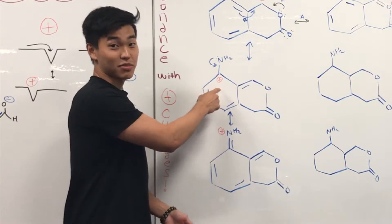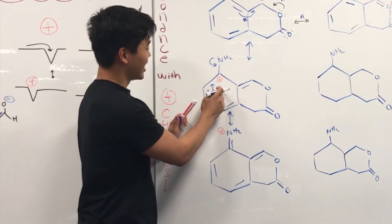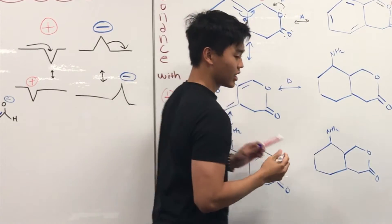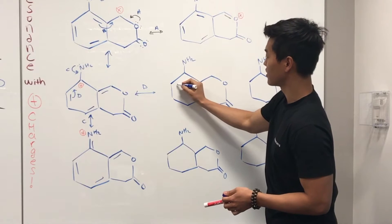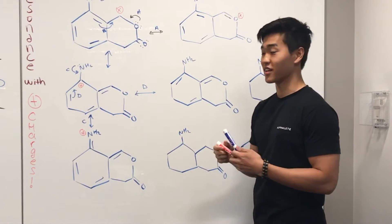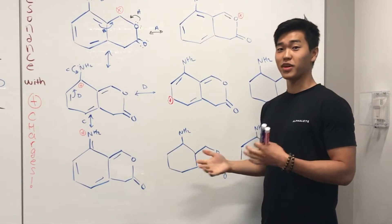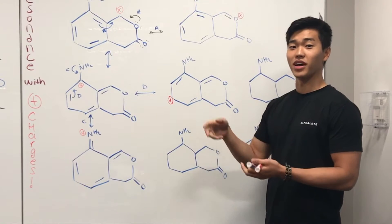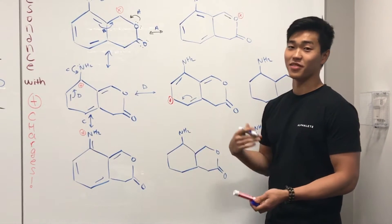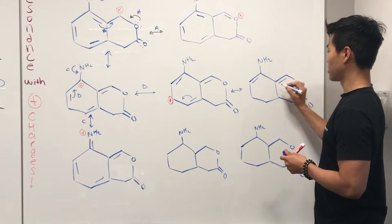Going back to the previous structure, the bond can also attack the positive charge — that's another path. We label the nitrogen path C and this new bond path D. This bond attacks adjacent to the charge, giving us a double bond here, with everything else unchanged. We get a new positive charge down here where the electrons left. From here, this positive charge is attacked by double bonds in the ring — this bond attacks the positive charge, giving us a new structure with a new double bond.